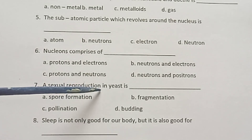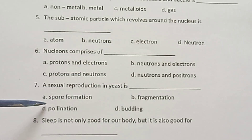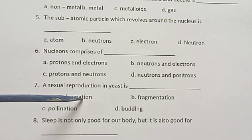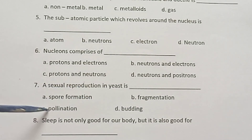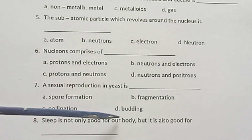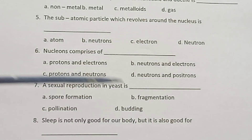Seventh one: Asexual reproduction in yeast is dash. Options: A) spore formation, B) fragmentation, C) pollination, D) budding.